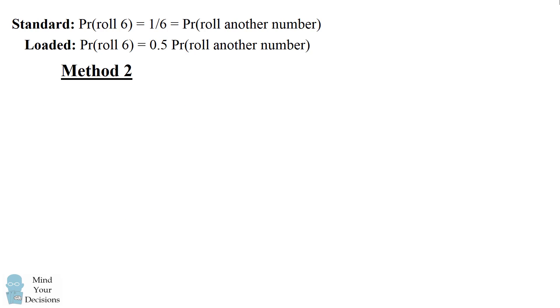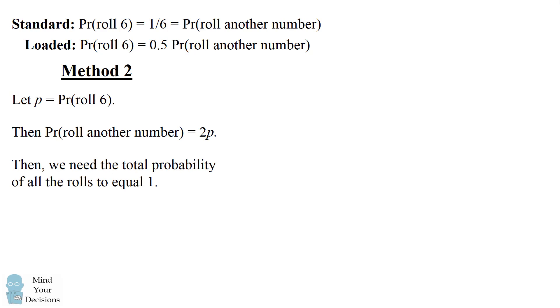There's another way you could have come up with this answer. Let's suppose P is equal to the probability of rolling a 6. We then have the probability of rolling any other number will be equal to 2P. Now we need the total probability of all the rolls to be equal to 1. So we can algebraically add up these variables. We have one term of P and five terms of 2P to be equal to 1. This will be a total of 11P that's equal to 1, which means P is equal to 1 over 11.